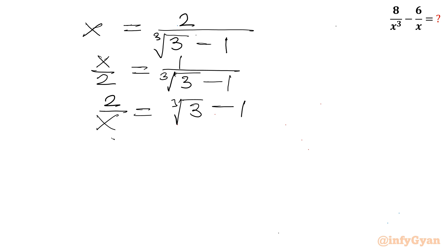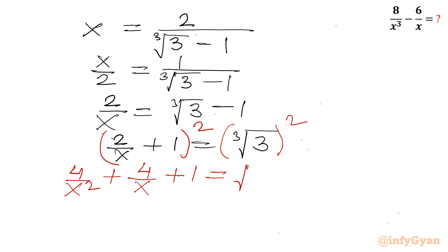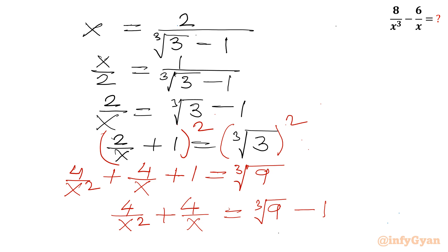Now let's add 1 to both sides: 2 over x plus 1 equals cube root 3. Now I will square both sides. Applying the a plus b whole square formula on the left: 2 over x whole square gives 4 over x squared, plus 2ab term gives 4 over x, plus b squared gives 1. The right hand side is cube root 3 squared, which is cube root 9. So rearranging: 4 over x squared plus 4 over x equals cube root 9 minus 1. This is equation number 2.